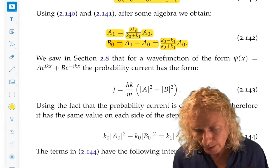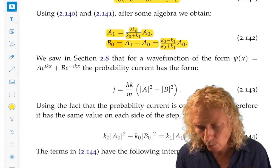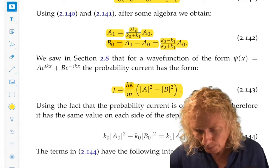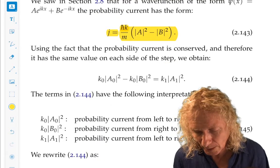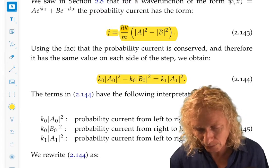Now, the probability current, we computed the probability current for a wave function of this type, as given by this. So, if we demand the probability current be the same on either side of the step, we get this relation. So, this gives us enough.